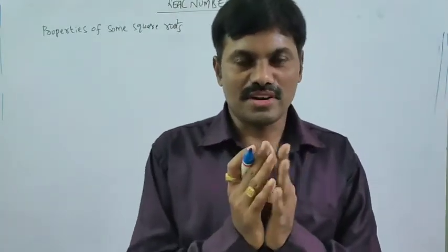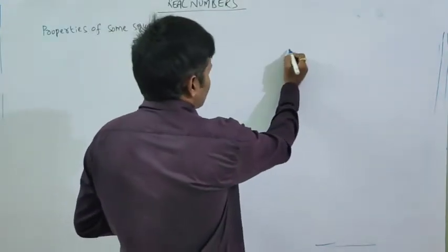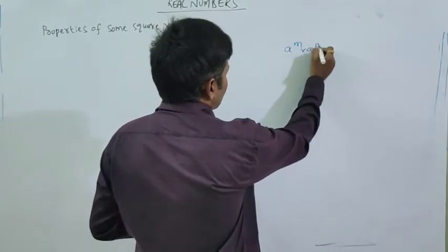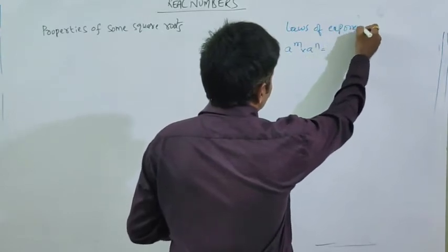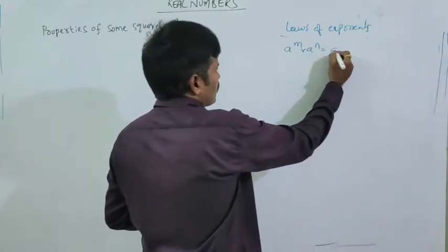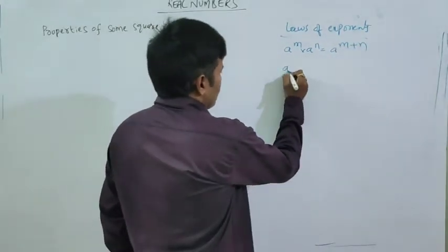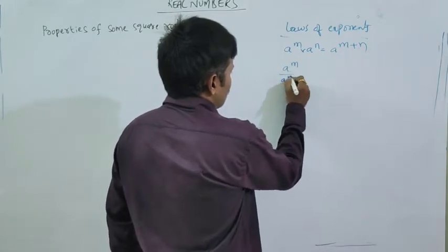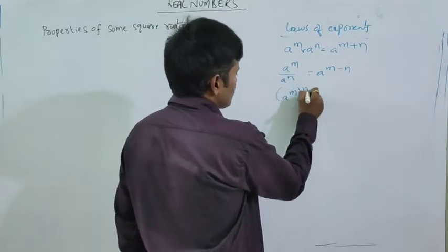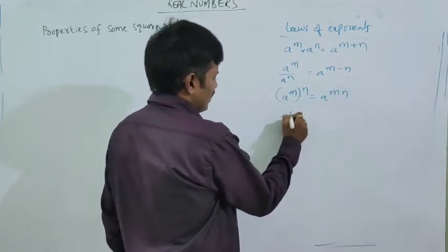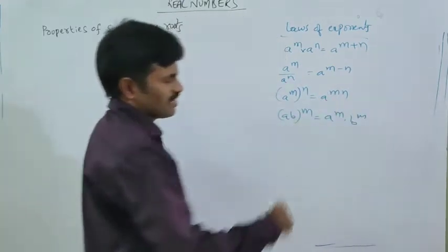If you know the laws of exponents, these are very easy. Some laws of exponents: a to the power of m into a to the power of n is equal to a to the power of m plus n. a to the power of m divided by a to the power of n is equal to a to the power of m minus n. a to the power of m, whole to the power of n, is equal to a to the power of m into n. And AB whole to the power of m can be written as A power m into B power m. These are some of the laws of exponents — not all — that we are using to discuss these properties of square roots.